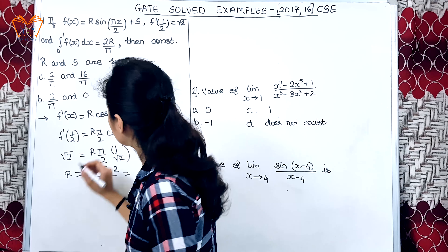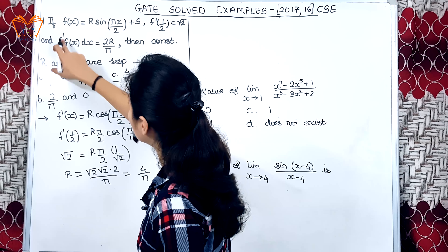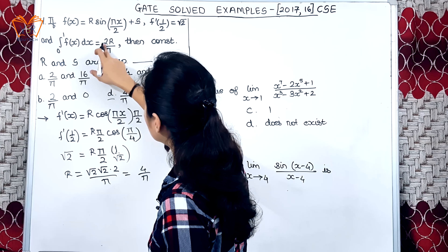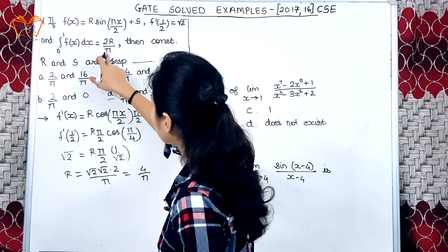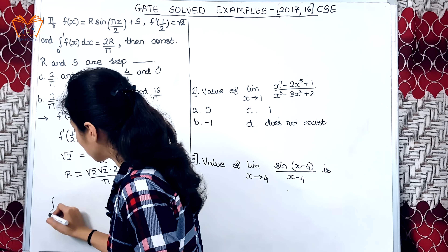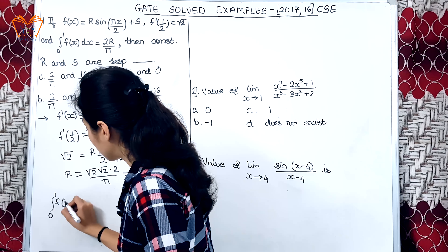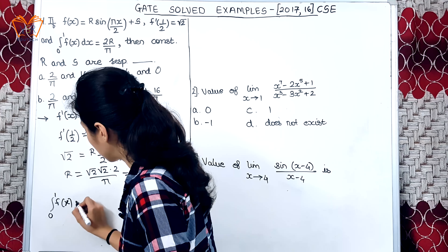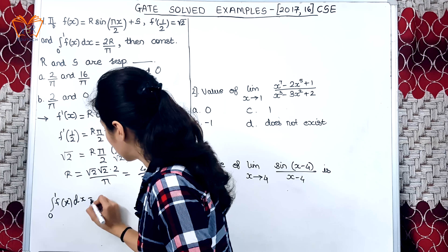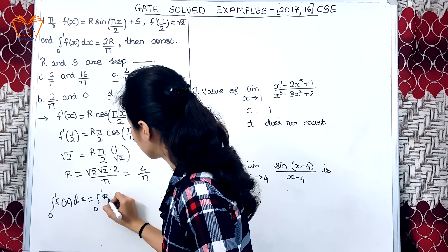If we see the options, C and D are valid because the value of r is 4/π, which we have already found. Now let us find the value of s. The integration from 0 to 1 of f(x) dx is equal to 2r/π — that value is defined.